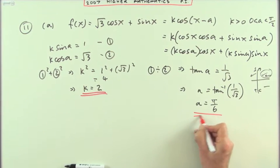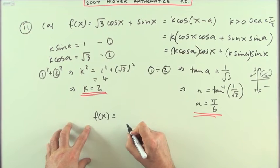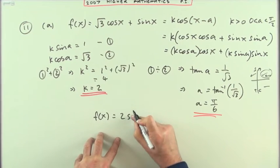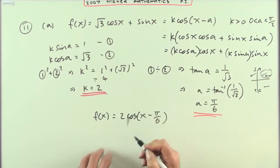So there's k and there's A, which means I can rewrite f of x as 2 cos x minus pi upon six.